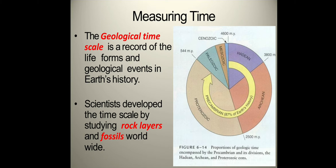Let us now discuss what is geologic time scale. It is a record of the life forms and geological events in earth's history. Scientists developed the time scale by studying rock layers and fossils worldwide. The geologic time scale also serves as the calendar for events in earth's history and the standard timeline used to describe the age of rocks, fossils, and events that formed them. It was also used by geologists to understand and determine the past events that happened on the earth.